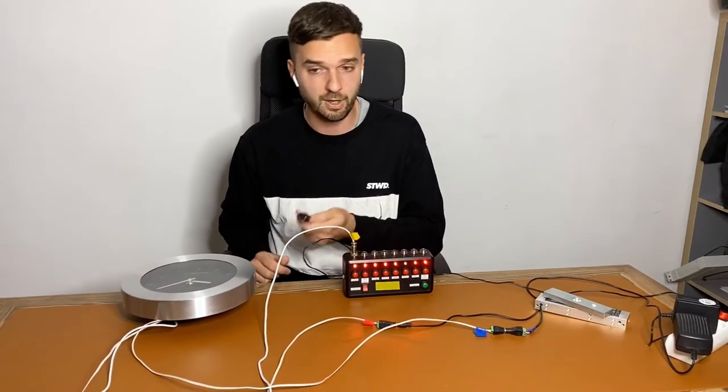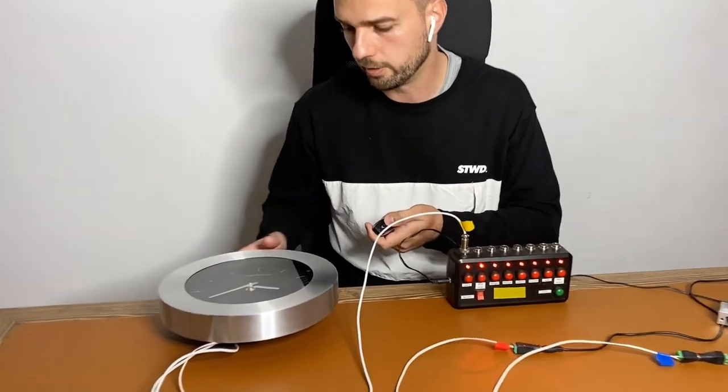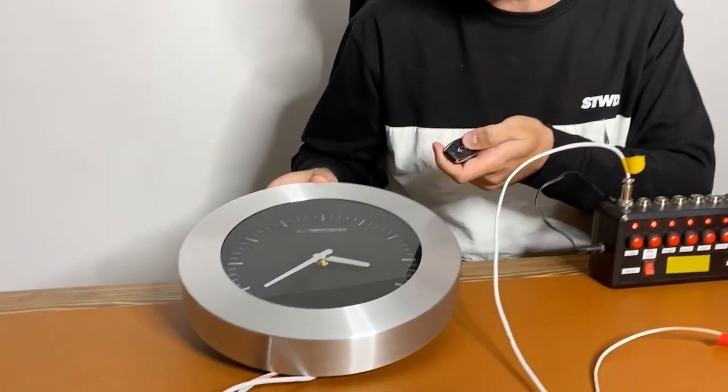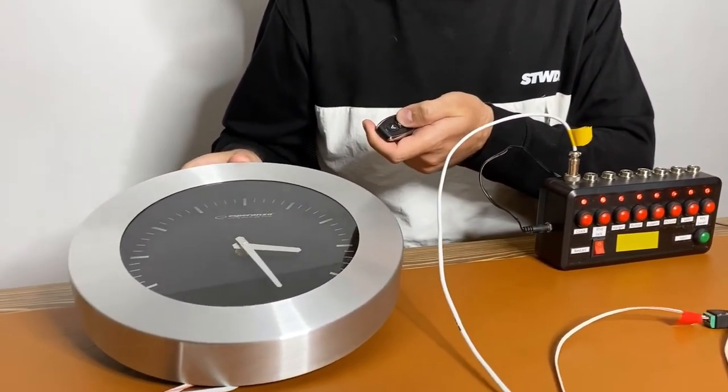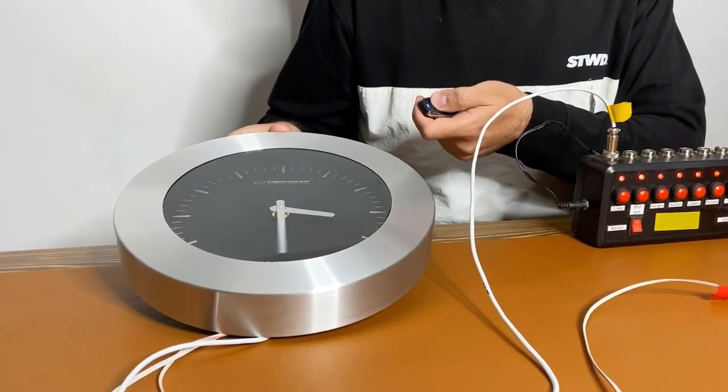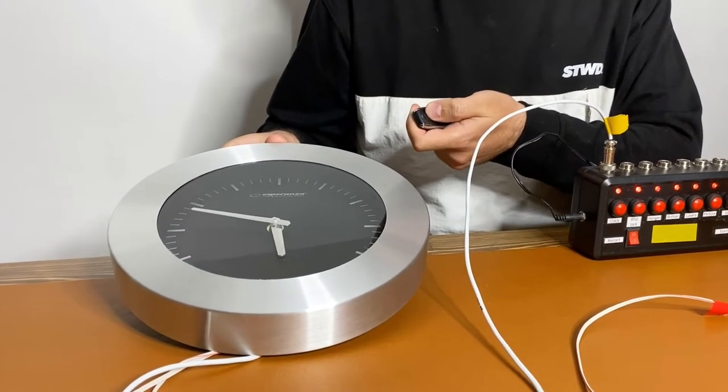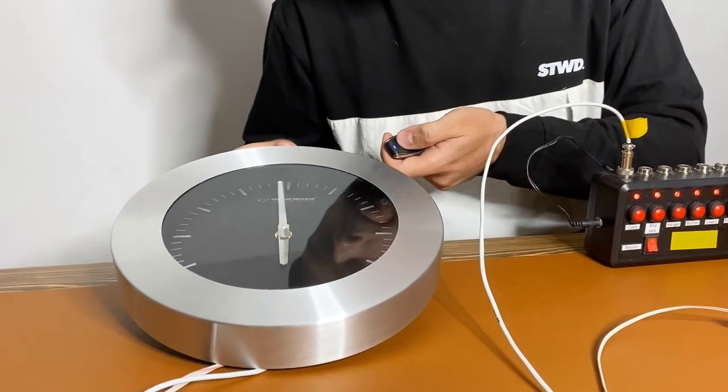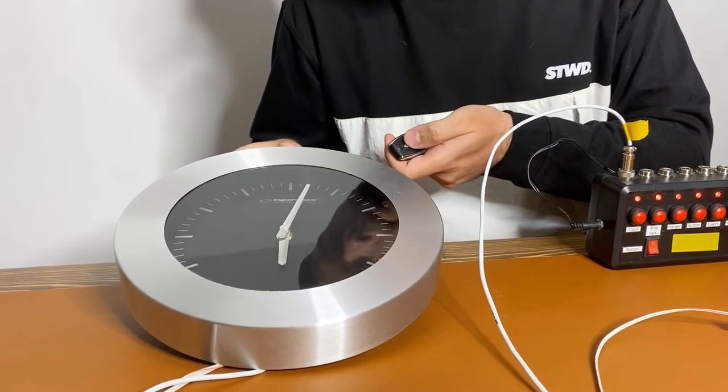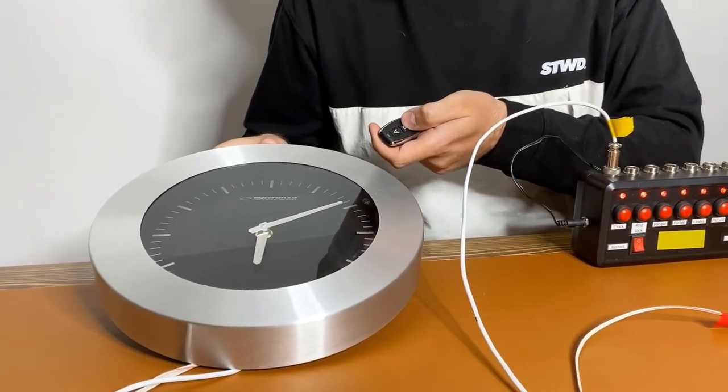What the players need to do, they find this sort of remote control with two buttons. One button is responsible for moving clockwise and the other one for counterclockwise. They need to set the clock for six o'clock. There is some margin of error, but not very much.